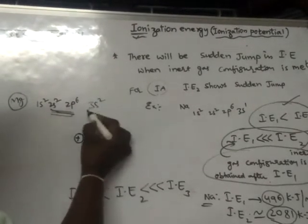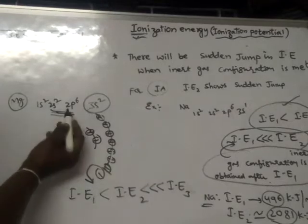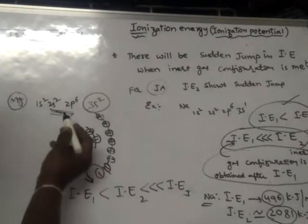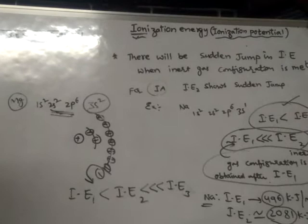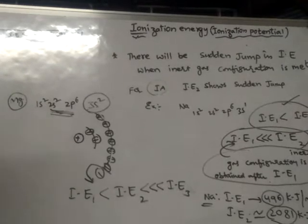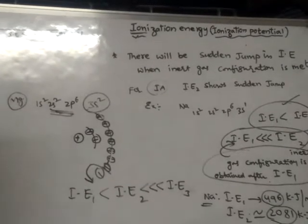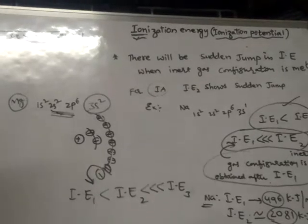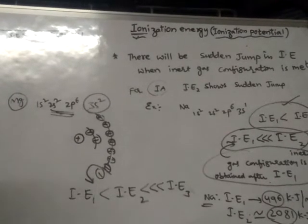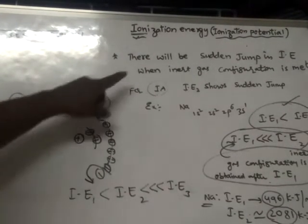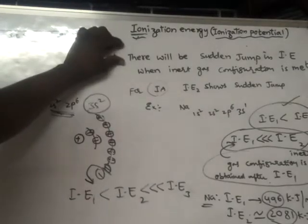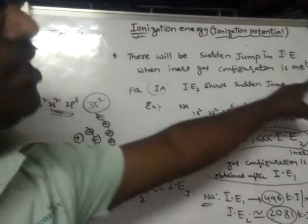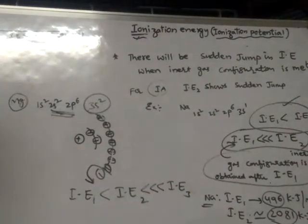After removal of two electrons from the magnesium atom, magnesium is getting an inert gas configuration. So whenever an inert gas configuration is obtained, there will be a sudden jump in the ionization energy — there will be a sudden jump in ionization energy when inert gas configuration is met.